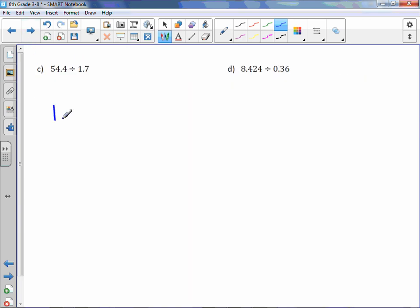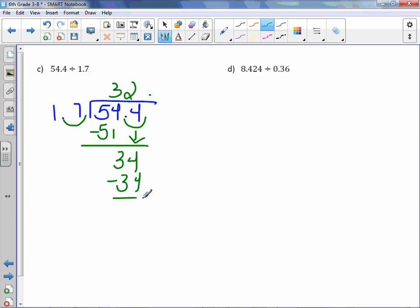Letter C. 54.4 divided by 1.7. I need to move my decimal point over to make it a whole number. I will do the same here and put my decimal point in the answer in our quotient. 17 goes into 54. Well, let's do some multiplication here. Let's try 3 times. 51. So I would say 3 times, which is 51. Subtract and get 3. Bring down the 4. 17 goes into 34 twice, which is 34. So our answer here is just 32.